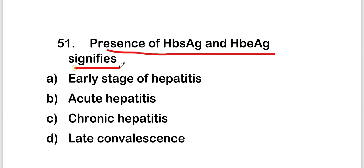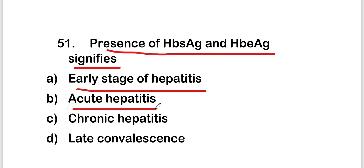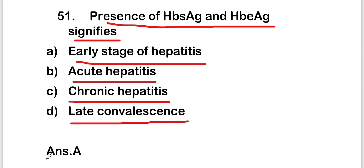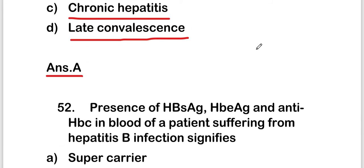The next question is: presence of HBsAg and HBeAg signifies early stage of hepatitis, acute hepatitis, chronic hepatitis, or late convalescence? The right answer is option A, that is early stage of hepatitis. So presence of HBsAg and HBeAg signifies early stage of hepatitis.